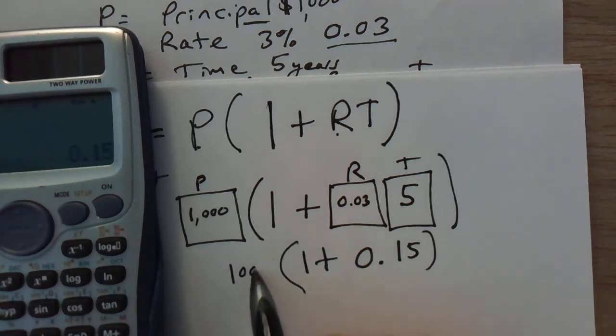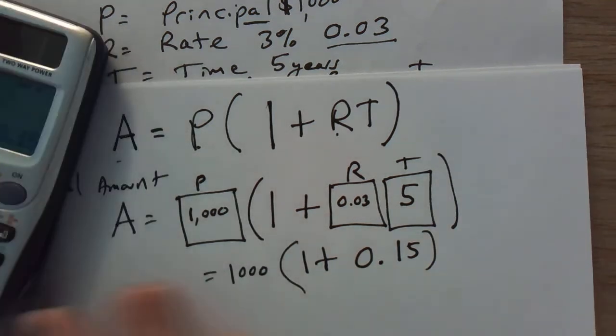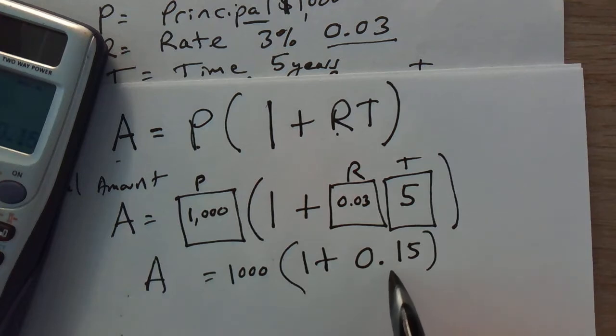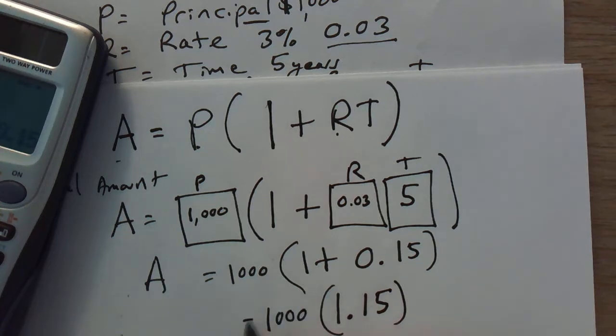I'm still going to add 1,000 on the outside here and this is still all equal to our total amount. We're still working in the parentheses. The next thing to do, I'm going to add 1 to the 0.15 so that becomes 1.15 and that's still in the parentheses. On the outside I still have the 1,000 and that's equal to my A which is the total amount.